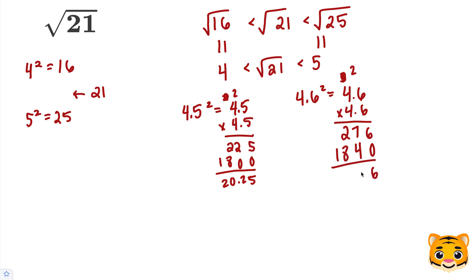When we add these values together, we end up getting 21.16, which we can see is a little bit closer to 21 than 20.25 is. So we can say that 4.6 squared gives us approximately 21.